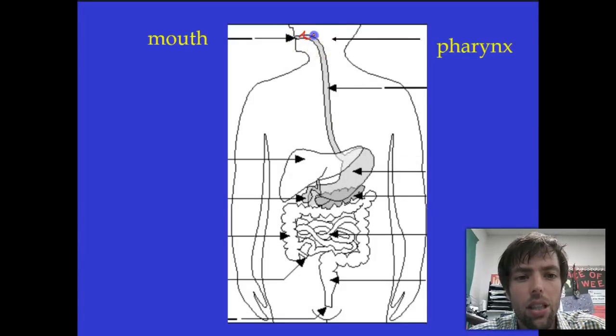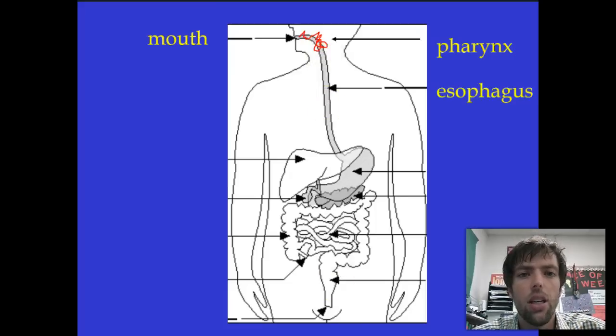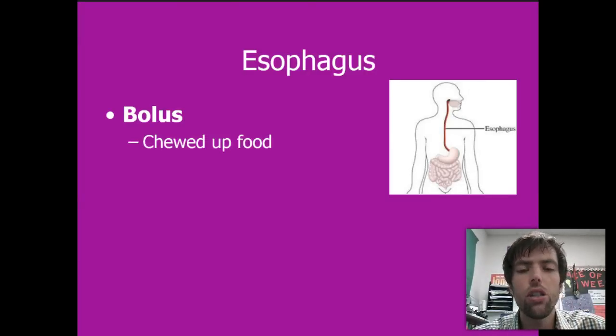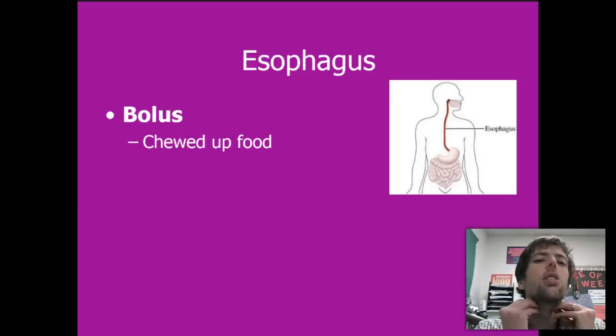So we've got our food, it came in here, chomp chomp chomp chomp chomp. Got gooey, gooey, gooey. Now we're going to move down this tube, which is known as the esophagus. After you label your picture, let's add some new bullets underneath the picture. Your esophagus has this thing called a bolus. And what your bolus is, is the chewed up food. The nasty, gooey glob that's going to go down your esophagus. But before it gets there, it has to bypass a flap called the epiglottis.